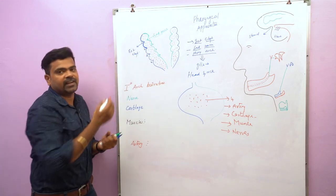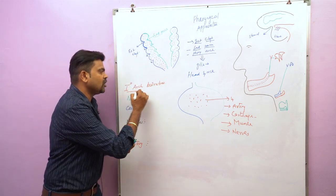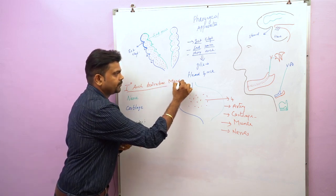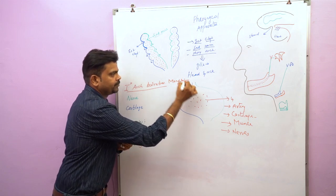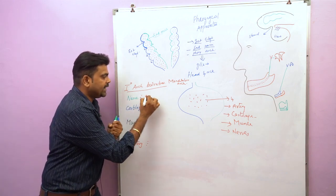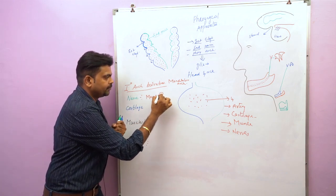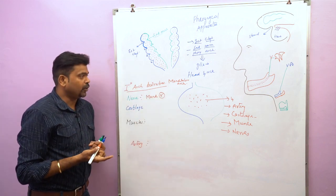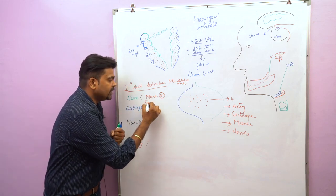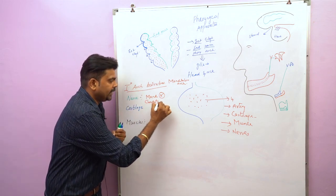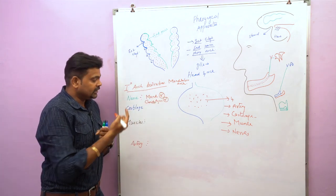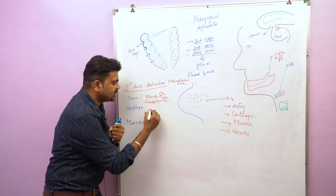The first pharyngeal arch derivative is otherwise called the mandibular arch. The nerve of the mandibular arch is the mandibular nerve. In the human embryo, the first pharyngeal arch has a double innervation: the mandibular nerve and one more nerve, the chorda tympani nerve.